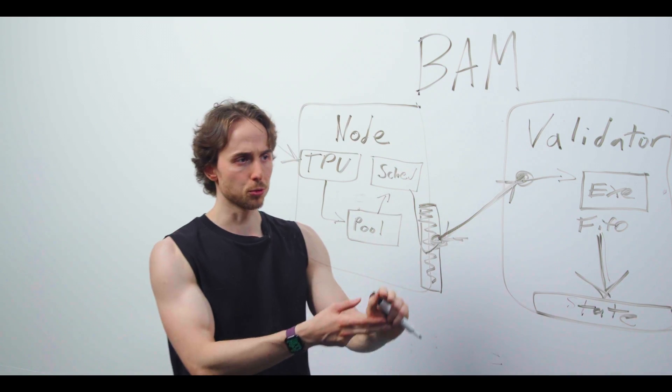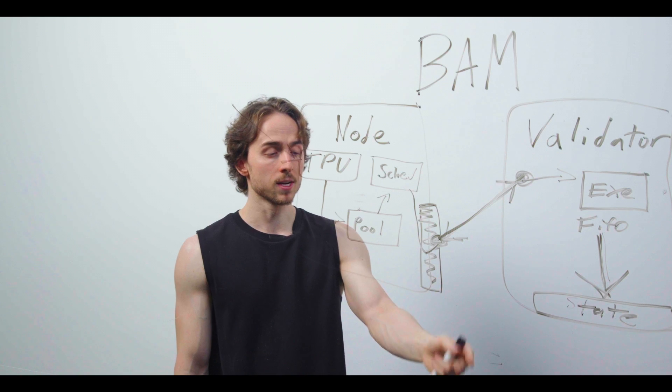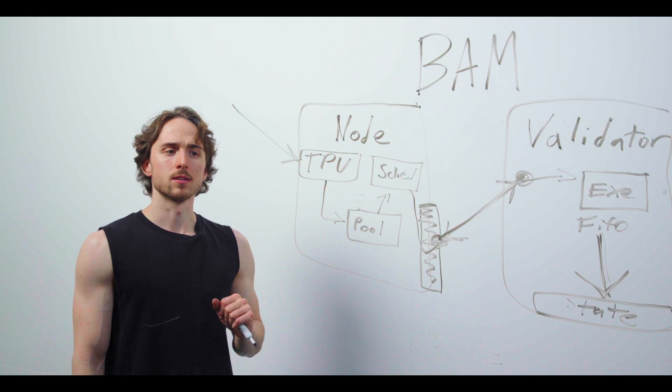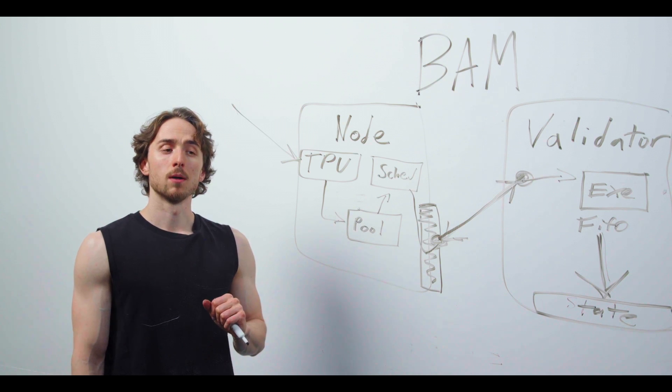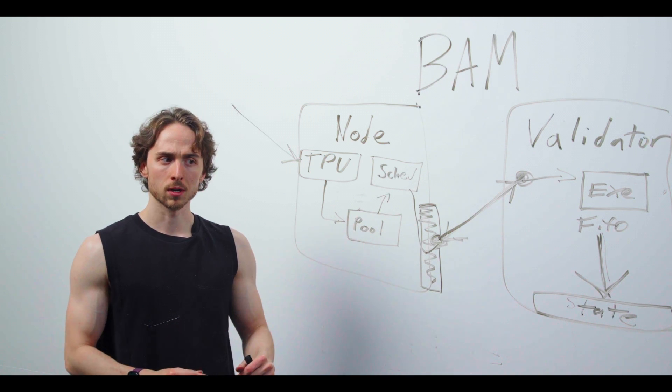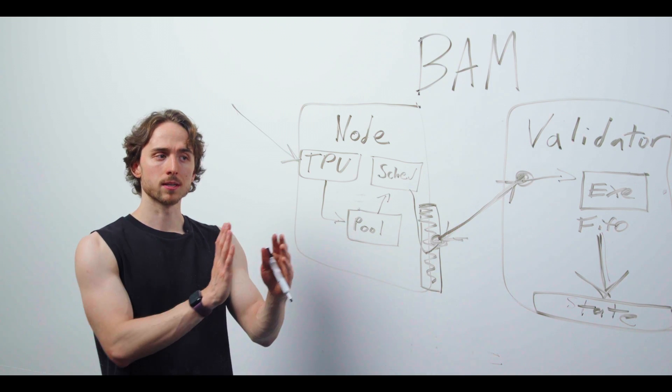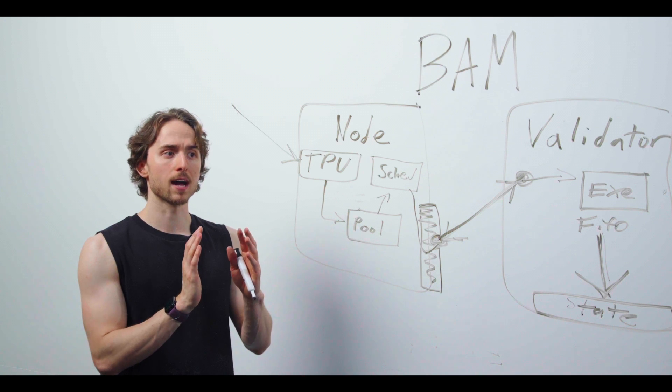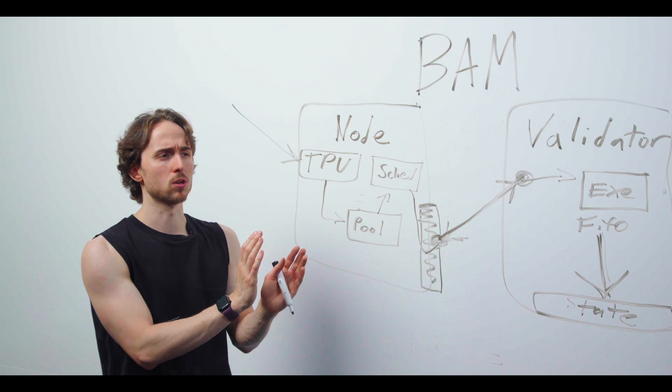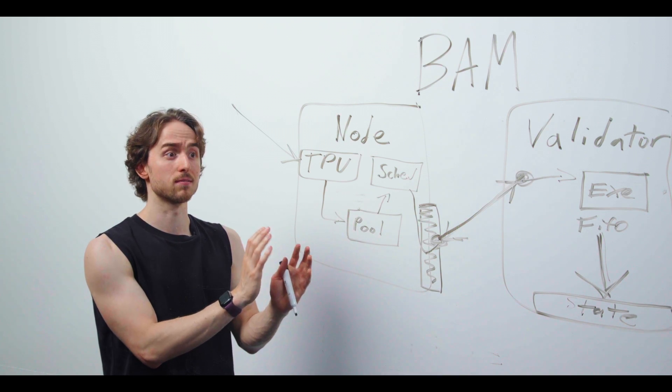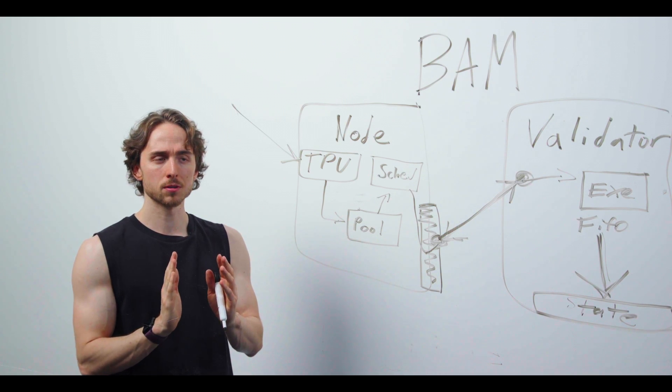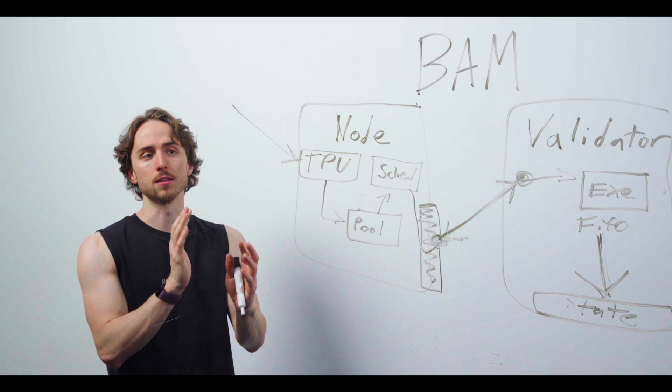We want to think of the node as a more rapid iteration system for the Solana network because now that consensus and the things that are absolutely crucial to liveness are more firewalled or protected inside the validator, we can have far more experimentation and extensions built in this node.